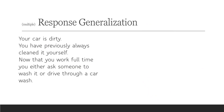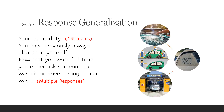Another example: your car is dirty. You have previously always cleaned it yourself. Now that you work full time, you either ask someone to wash it or drive it through a car wash. Your dirty car is the stimulus. Cleaning it yourself is the response you originally learned. Now you have different variations of that response that serve the same function — cleaning the car. You can wash it yourself, call someone to come and wash it, or drive through a car wash. Those are the multiple responses.